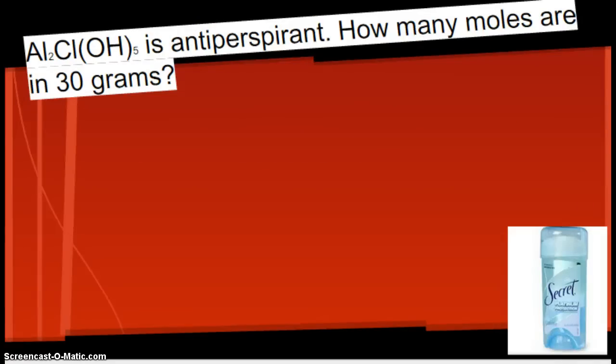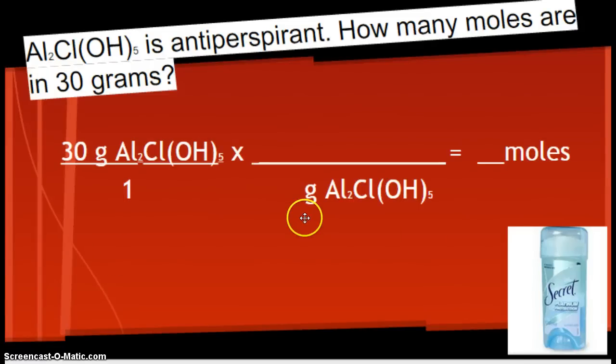Al₂Cl(OH)₅ is antiperspirant. How many moles are in 30 grams? Alright. So, where are you going to start? Again, if you can do this on your own, hit pause and get your own answer. Otherwise, what did I give you? Started with 30 grams. So, write 30 grams. Put it over 1. The bottom of my next fraction has to say what? Grams of Al₂Cl(OH)₅.